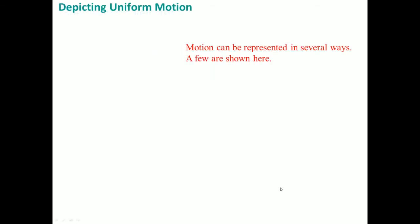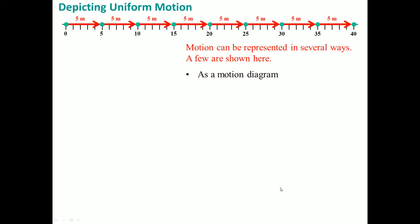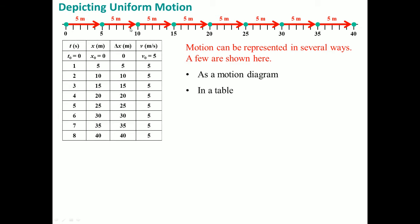Let's look at uniform motion. Motion can be represented in several ways. This is a motion diagram — each dot represents a particular point in time. It starts at zero seconds, then goes to five meters, 10 meters, 15 meters. The change here is five meters each step. Sometimes you see it as a table: T in seconds is your time, X is your distance in the X direction, delta X refers to the change in the X direction, and V refers to your velocity — the change in X per unit time.